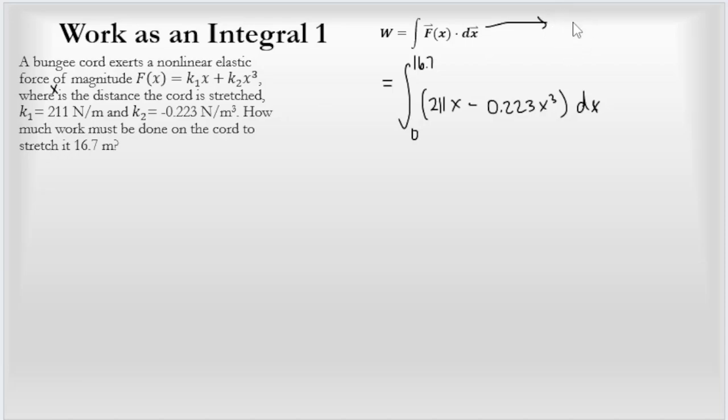I'm going to assume the bungee cord—if I draw a picture and worry about this dot product—the bungee cord is oriented up and down, so there's a Δx and there's the F(x). When I do this dot product, because these two vectors are parallel, the dot product equals 1. So I'm not including a dot product in here because it's not required. It turns out I just need to integrate this function with respect to x from 0 to 16.7.